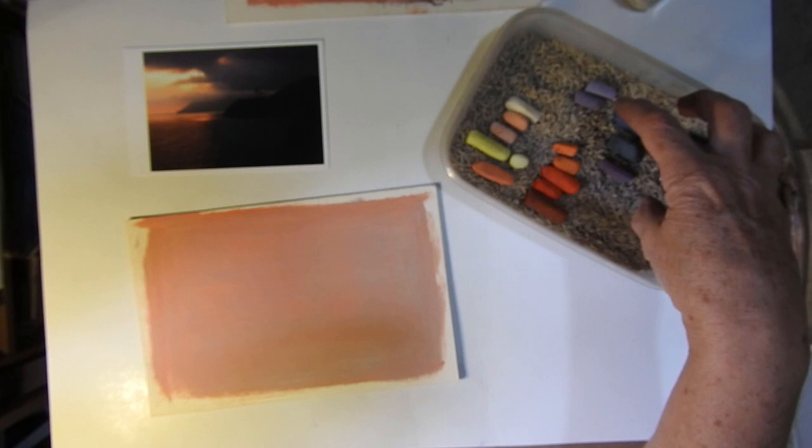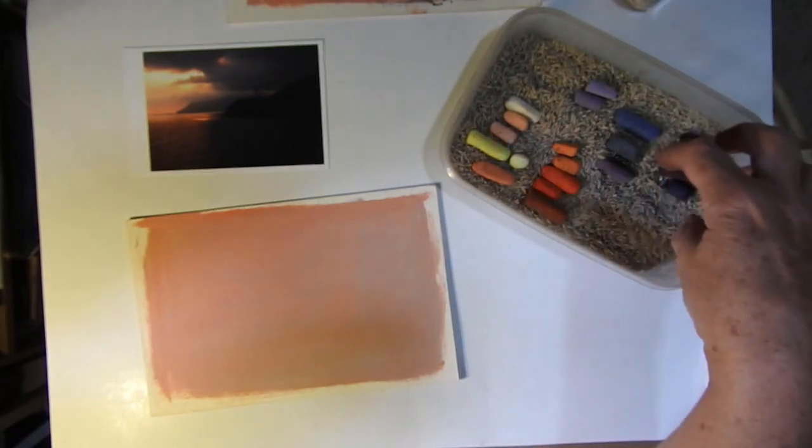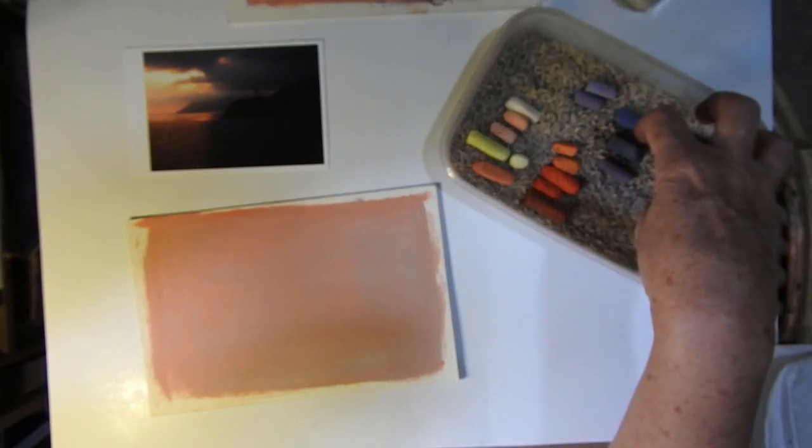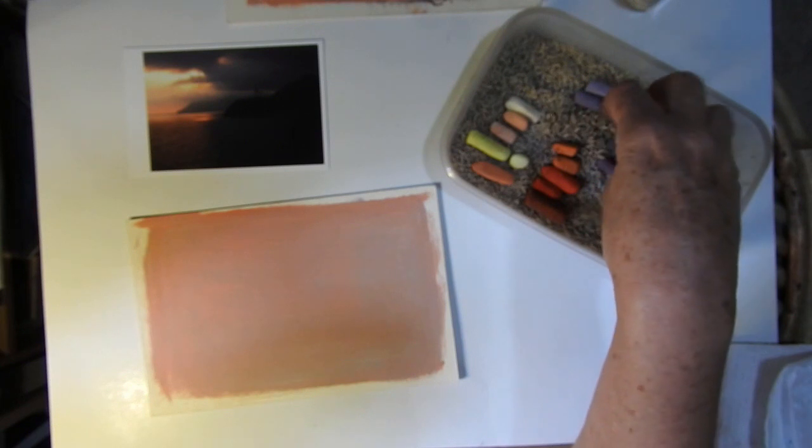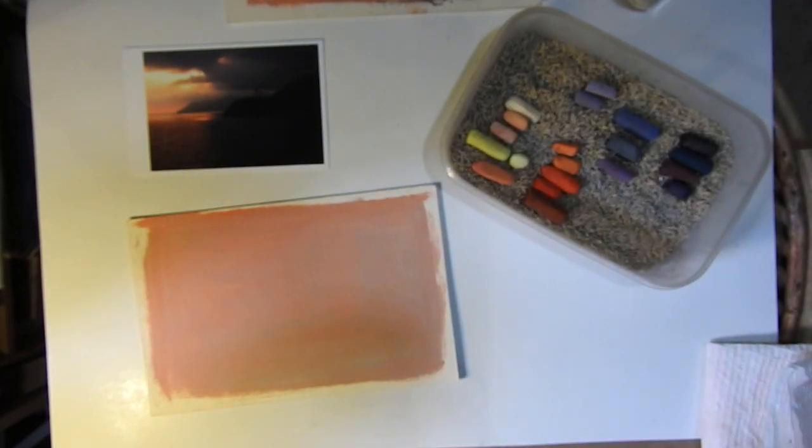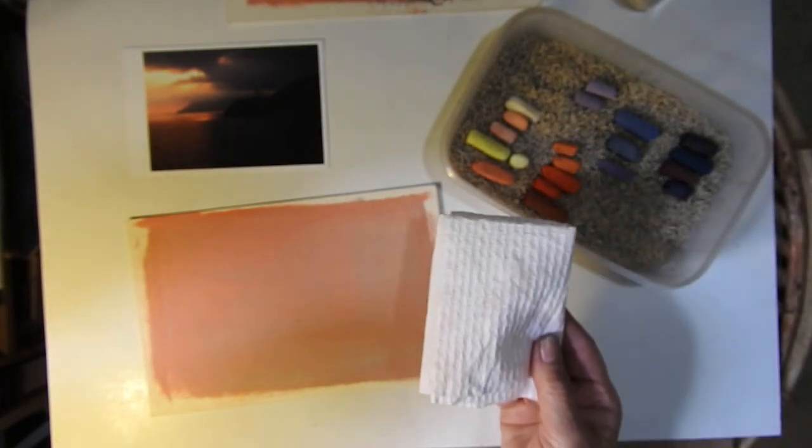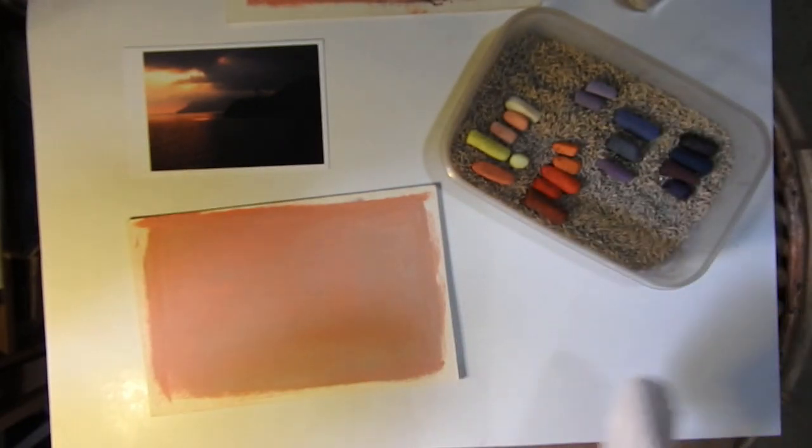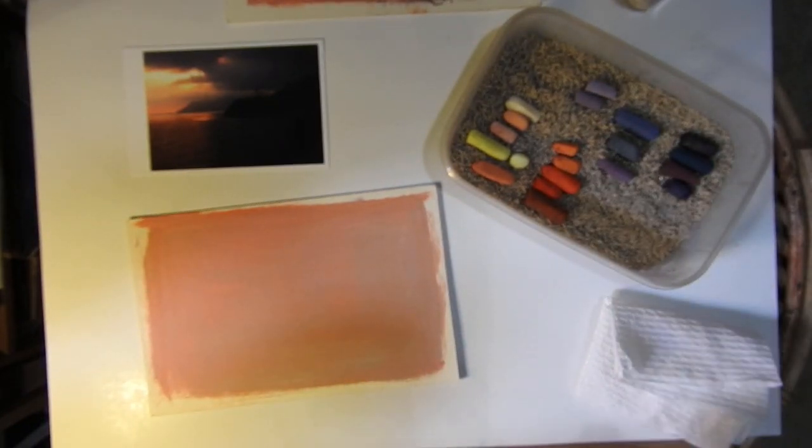So I've split them up into sky, sea, and the darks of the land, the mid tones of the sky, and the lighter ones of the sunset colors in the sky. Just got a little bit of paper here to wipe my hands on as I need to. So let's get started.